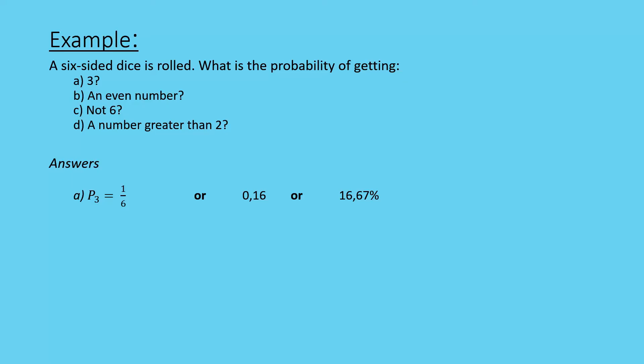Even numbers. Our even numbers are 2, 4, and 6. So there are three possible outcomes out of the six. Once again, you can see I've got probability of even numbers. So that's a 50% chance or 0.5.